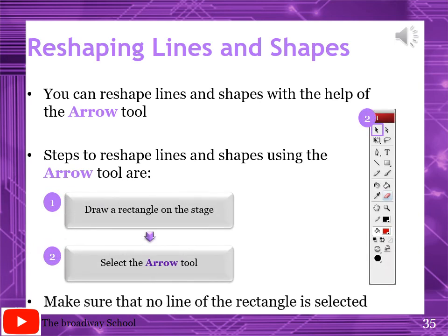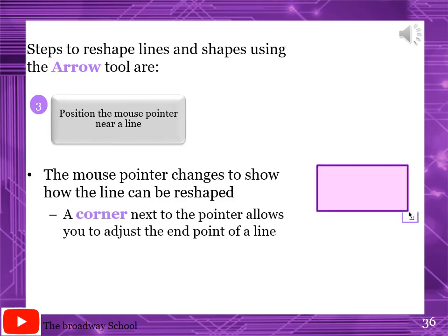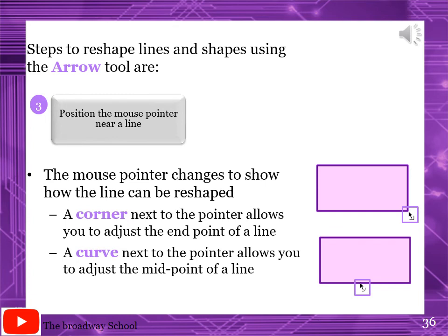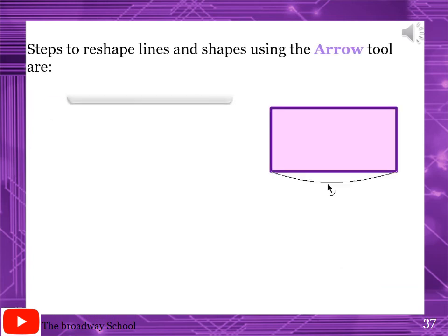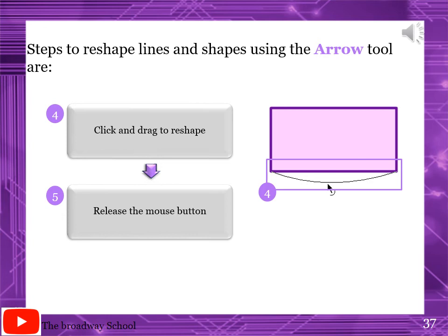Page number 144: Reshaping Lines and Shapes. With the arrow tool, you can reshape lines and shapes. Steps: draw a rectangle on the stage. Select the arrow tool and make sure no line of the rectangle is selected. Position the mouse pointer near a line - the pointer changes to show how the line can be reshaped. A corner next to the pointer allows you to adjust the endpoint of a line; a curve next to the pointer allows you to adjust the midpoints. Click and drag to reshape, then release the mouse button.